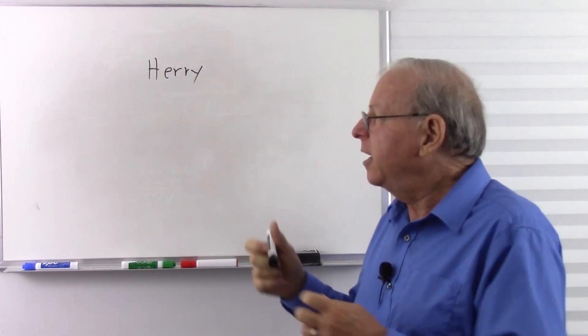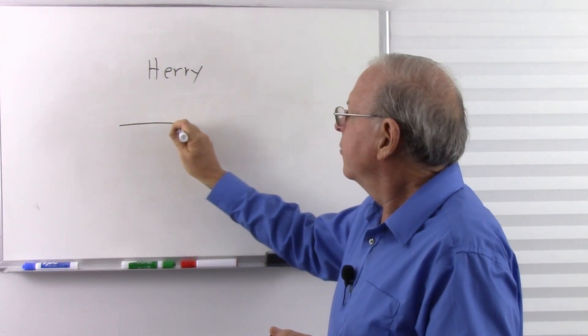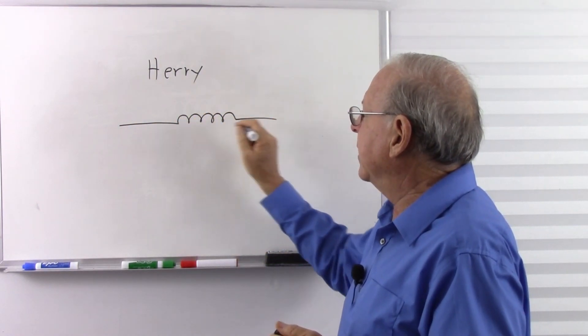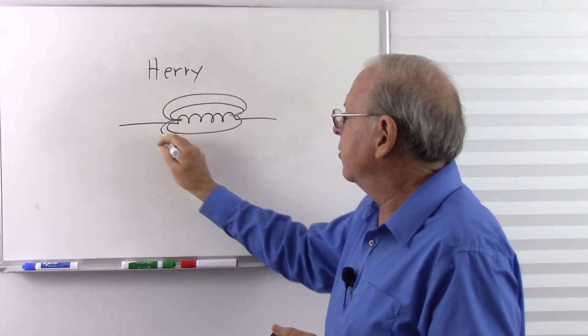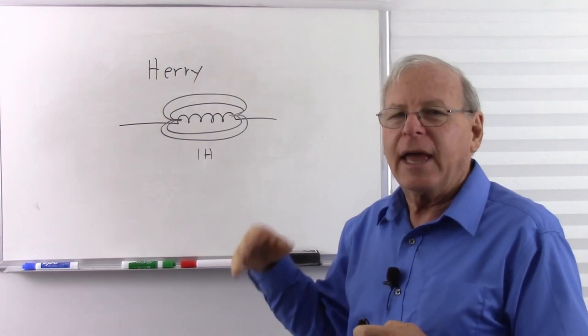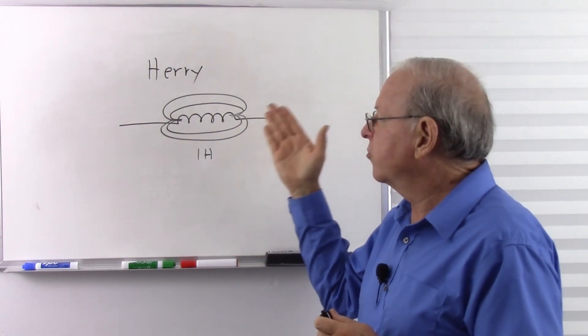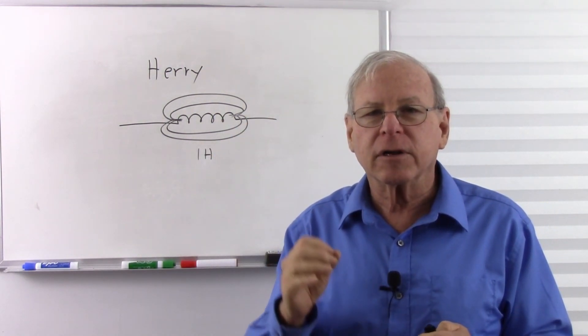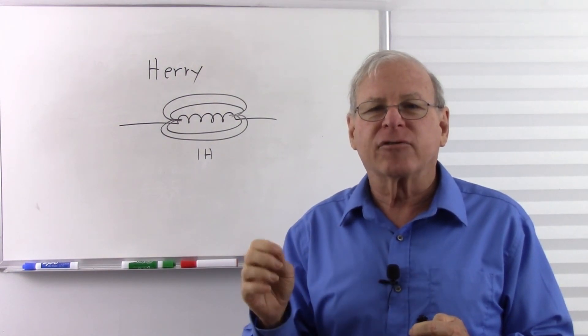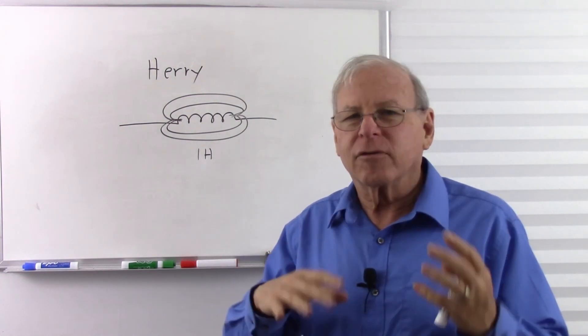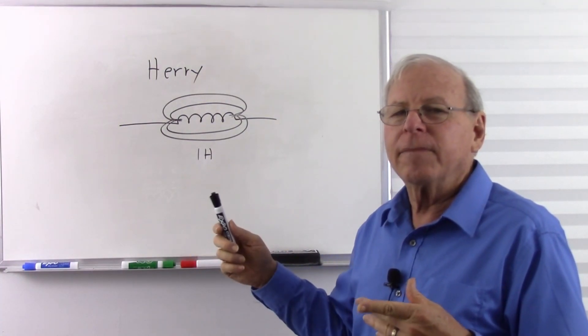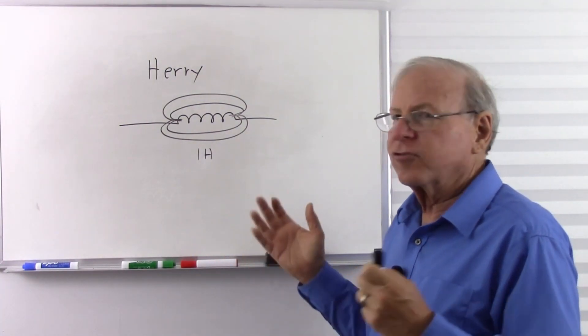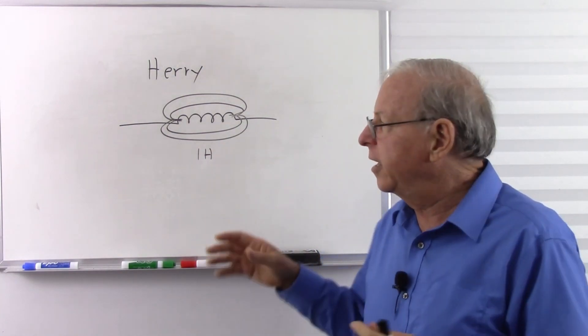A one-Henry inductor stores energy in a magnetic field, where a capacitor stores its energy in an electric field. A one-Henry inductor stores the same energy in its magnetic field that a one-farad capacitor stores in its electric field. So they're sort of like equal and opposite types of components. So a one-Henry inductor is the counterpart of a one-farad capacitor. They store the same amount of energy, just different ways.